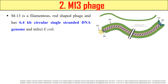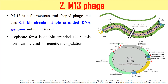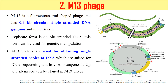The next example of a phage is M13 phage. It is a filamentous rod-shaped phage with a genome of 6.4 KB and a single-stranded genome. It infects E. coli bacteria. When it replicates, its replication form is double-stranded, but its genome within the phage head is single-stranded. M13 vectors are generally used when we want to obtain single-stranded copies of our DNA.